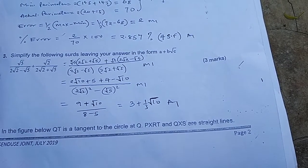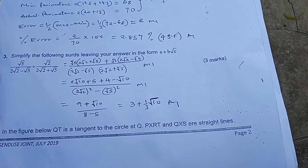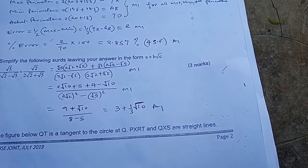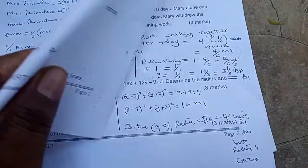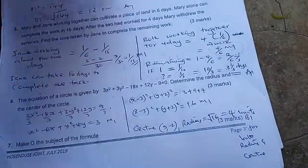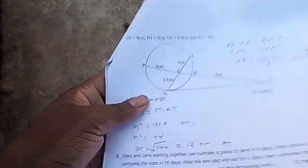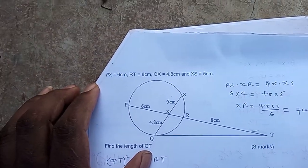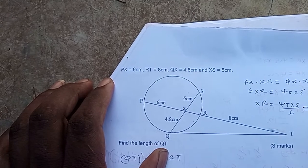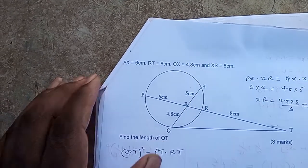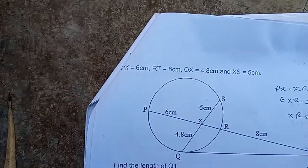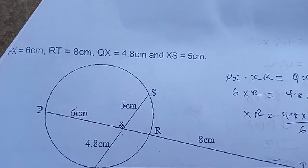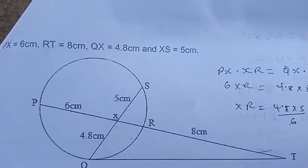PXRT and QXS are straight lines. PX is 6 cm, RT is 8 cm, QX is 4.8 cm and XS is 5 cm.